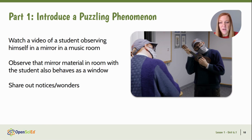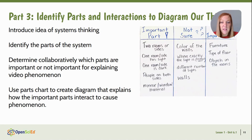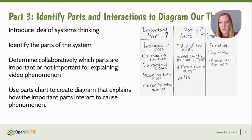The next part of the lesson introduces the idea of systems thinking. We're not really going to name it that, but we want students to understand that there are things within this phenomenon that are working together to cause what we see happening. So together we're going to record what the parts of the system are — such as the rooms, the lights, the people — and then we'll determine whether those parts are important for explaining why the student can see themselves but not their teacher, while the teacher can see the student. Students will use this parts chart to develop a model that explains how the important parts interact to cause the phenomenon.